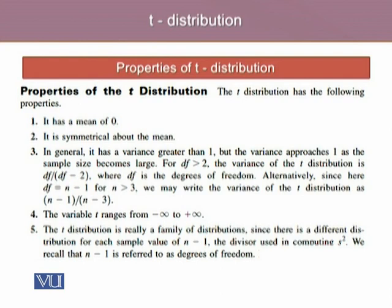It is symmetrical about the mean. In general, it has a variance greater than 1, but the variance approaches 1 as the sample size becomes large. For degrees of freedom greater than 2, the variance of the T-distribution is df divided by df minus 2.